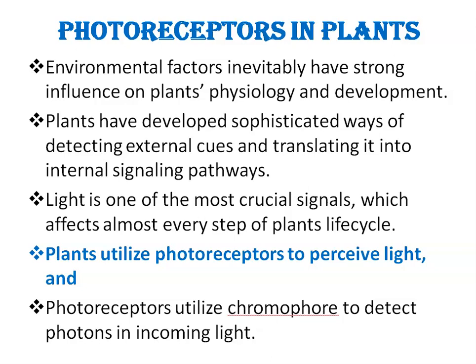Plants utilize photoreceptors to perceive light. Photoreceptors are proteins that are specially designed to perceive light and signal certain biological effects in plants. Photoreceptors utilize chromophores to detect photons in incoming light. Chromophores are a group of atoms and electrons that are part of organic compounds and that interact with light to form color. Chroma means color.